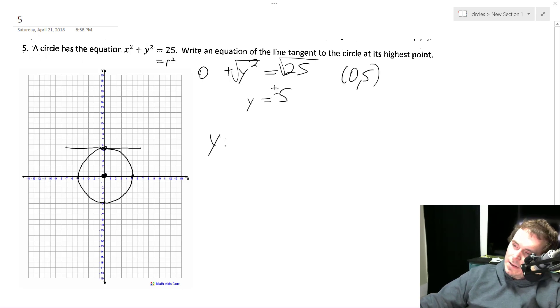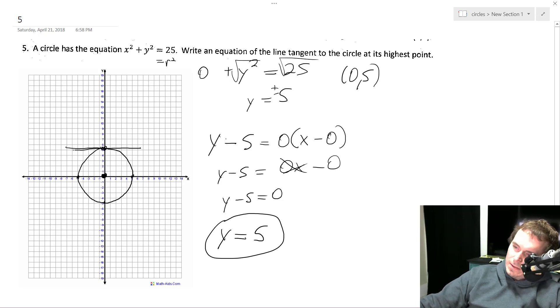So y minus 5 is equal to the slope which is 0, then we have x minus 0. So we distribute the 0, we get 0x which just cancels out and then minus 0, so we get y minus 5 equals 0. And finally we just get y equals 5 which makes sense, that just means there's a horizontal line drawn across at the y equals 5 mark.